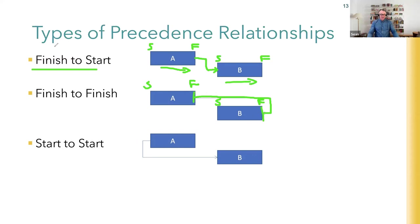An example of finish-to-finish: in book production, binding can't be completed until printing is complete. Binding can start while printing is still being done, but you can't finish the binding process before the printing is fully complete. You can start it, you just can't finish it until the predecessor finishes.